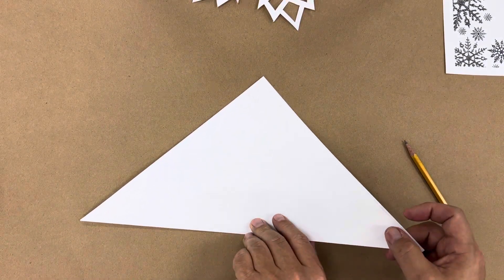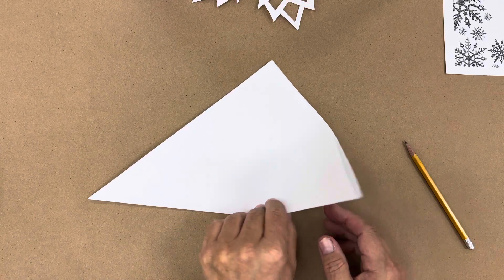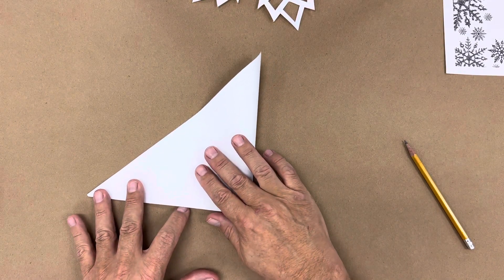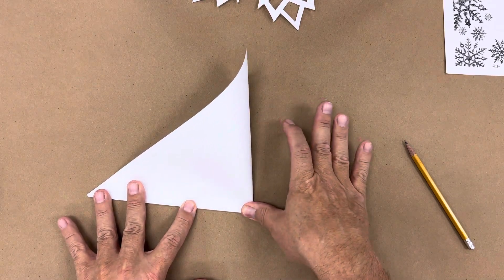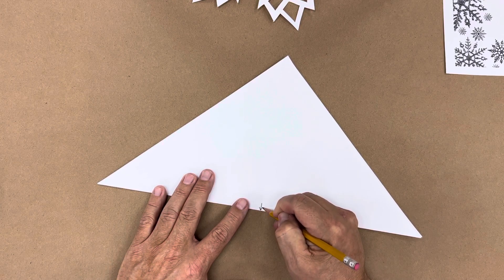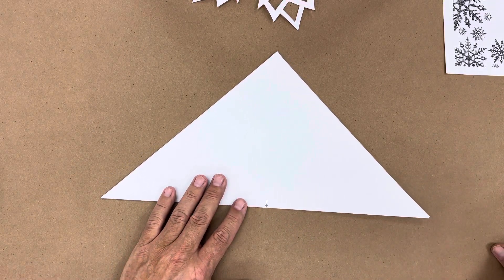And then we're going to take this, and we're not really going to fold it in half, we're just going to pinch it in half. So I'm going to take one side to the other, and I'm going to give it a little pinch down here, and open it up. Now I'm going to mark this with a pencil, just so it's easy to see on the camera, but you could do this without.